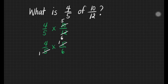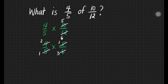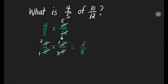How about 4 and 6? Can we cancel them too? Yes. What number can we divide both 4 and 6? That's 2. So 4 divided by 2 is 2, and 6 divided by 2 is 3. So it's really easier for us to multiply smaller numbers. Let's do the multiplication of fractions. 2 times 1 is equal to 2, and 1 times 3 is equal to 3. So, what is 4 fifths of 10 twelves? Our answer would be 2 thirds.